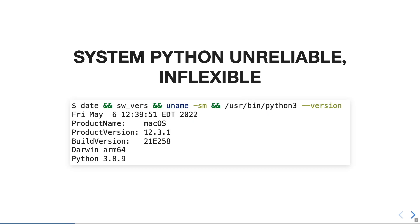My team uses macOS for development. Apple tends to keep its Python 3.x installation within Python EOL dates, but it's always a little out of date. Apple says not to rely on this, and it's for internal use only — a policy similar to Homebrew's, but at least Homebrew's Python won't just disappear someday.